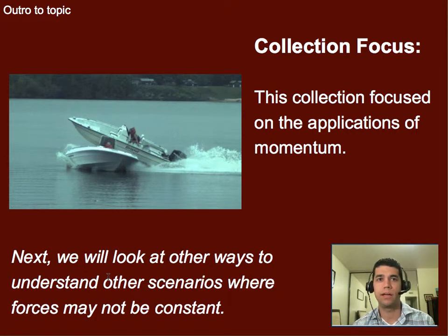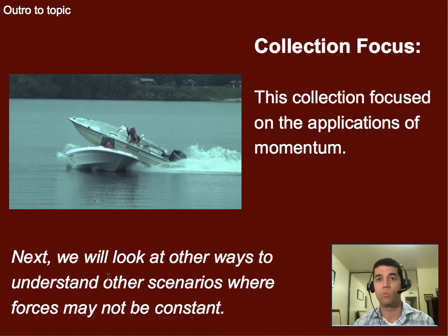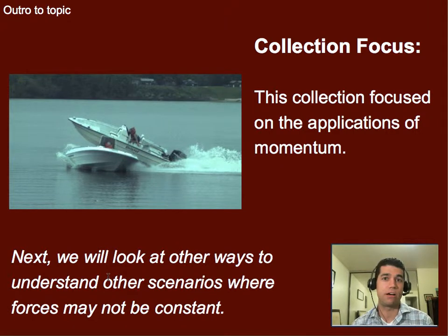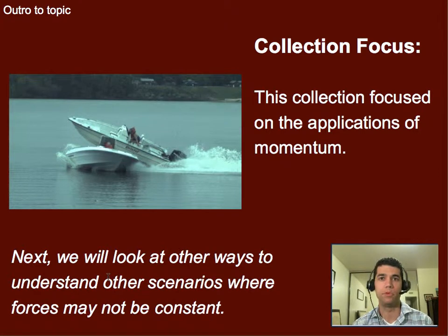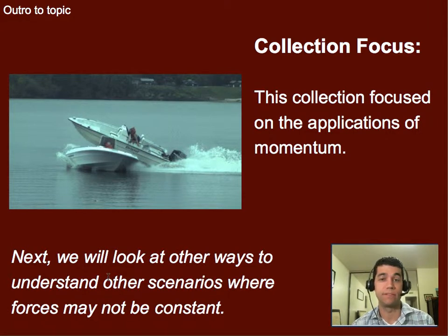Next, we can begin to look at other ways to understand scenarios where forces may not be constant. Momentum is one lens we can use, but sometimes it isn't the best one — especially if things aren't really colliding, but just involve a non-constant force. We want an easier way to describe or predict how fast something's going to be moving. That's what we're going to move into next.